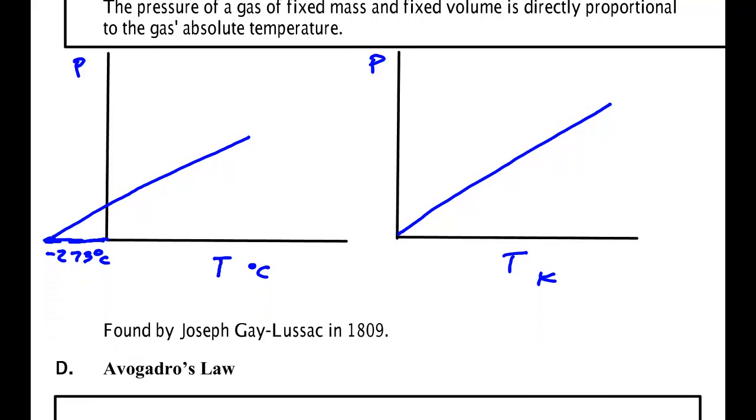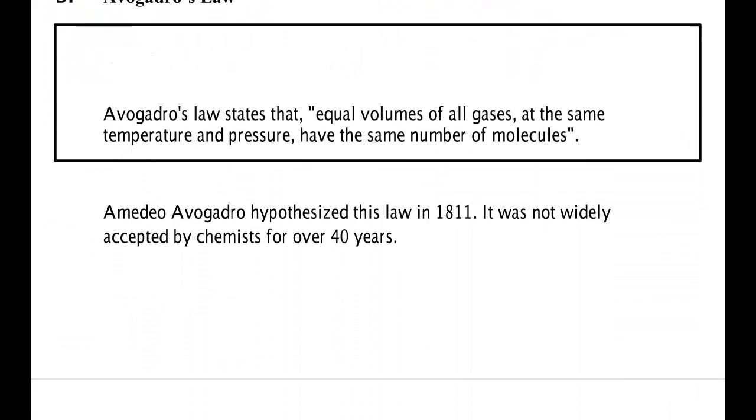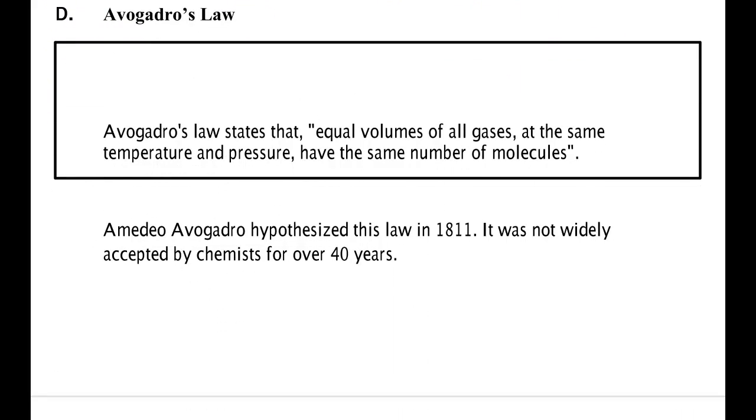Gay-Lussac found this law in 1809. And the last bit of experimental evidence is what's sometimes called Avogadro's law. And it relates how these properties of the volume deal with the number of particles.